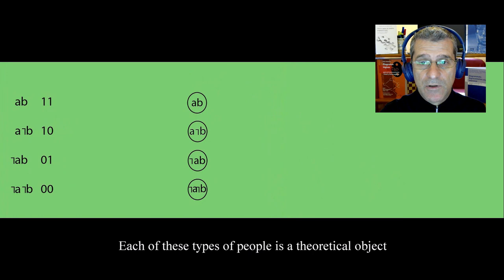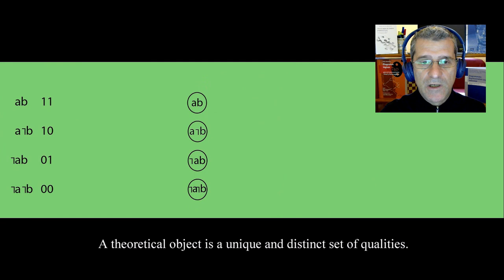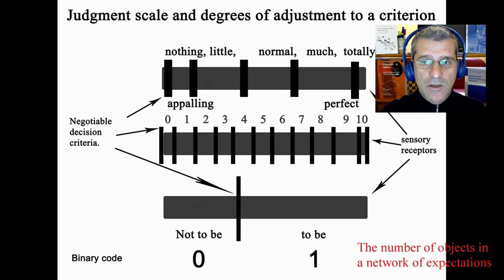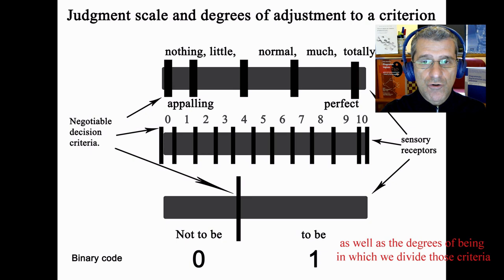Each of these types of people is a theoretical object. A theoretical object is a unique and distinct set of qualities. The number of objects in a network of expectations depends on the number of criteria, as well as the degrees of being in which we divide those criteria.